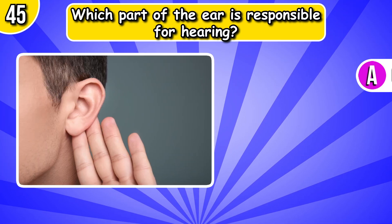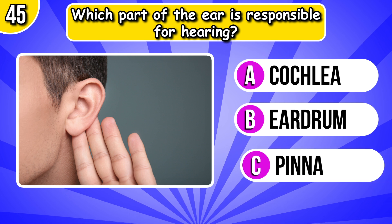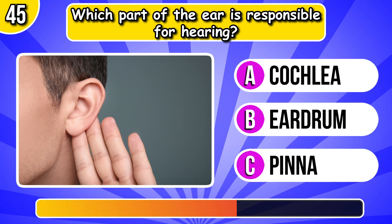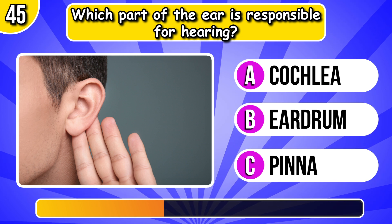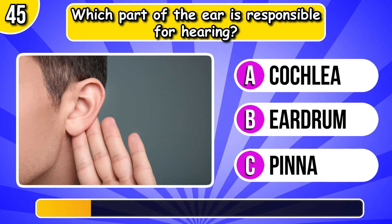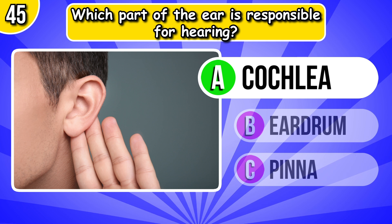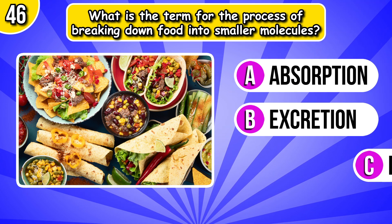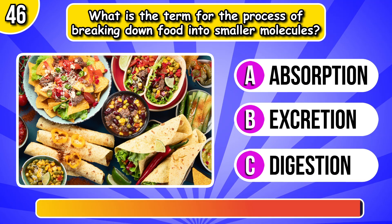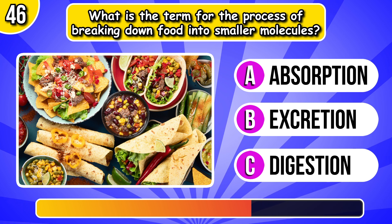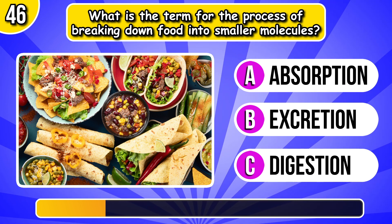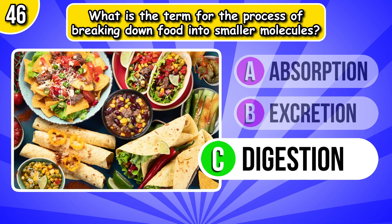Which part of the ear is responsible for hearing? It's cochlea. What is the term for the process of breaking down food into smaller molecules? It's digestion.